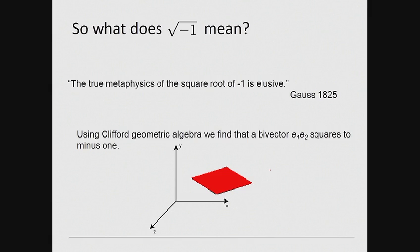Using Clifford geometric algebra, interestingly, we find that a bivector squares to minus one and as a rotation operator for the plane, analogous to the unit imaginary. Hence, Clifford provides a clear geometrical meaning of the unit imaginary as a unit area, as shown.